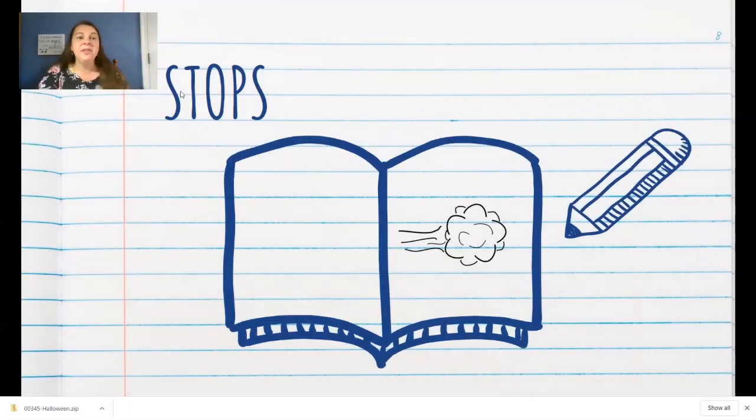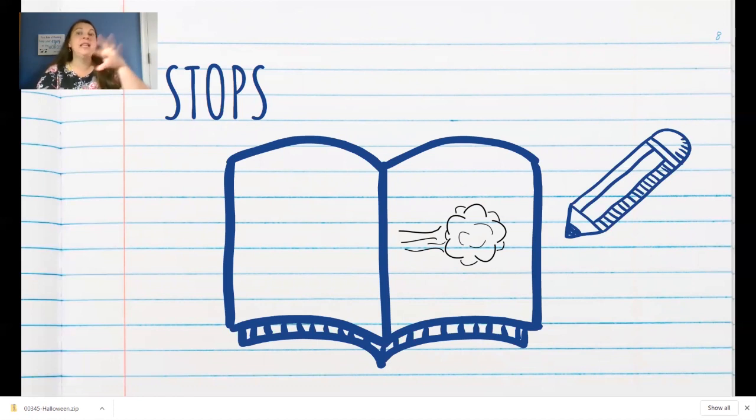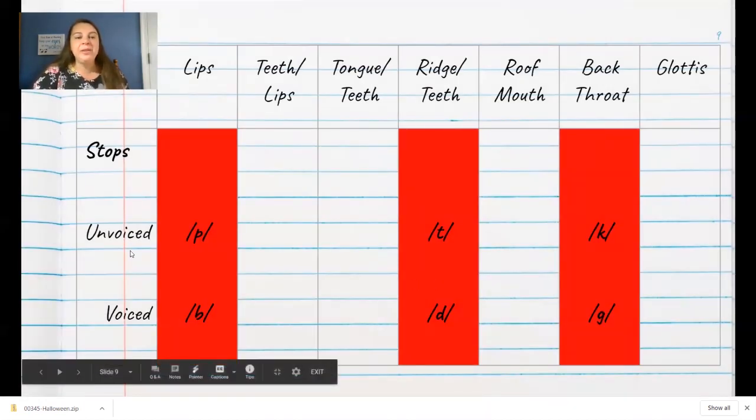Now stop sounds are kind of fun because they are associated with this puff of air that comes out of your mouth. Sometimes I like to take a tissue and hold a tissue in front of a student's mouth and have them make a stop sound and they'll see that the tissue kind of dance. Here's a good early elementary joke for you. How do you make a tissue dance? Put a little boogie in it. Well, we're not going to put little boogies in our tissues today, but we are going to make stop sounds that give a nice little puff of air.